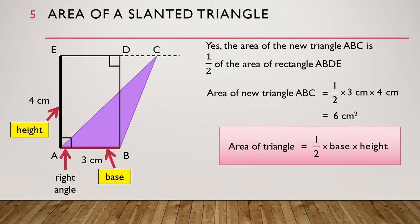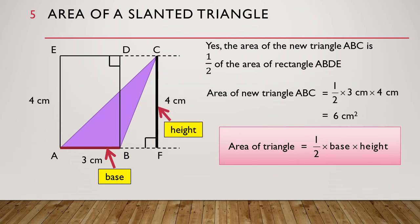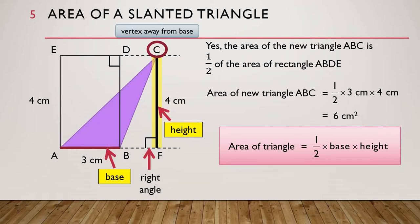Let's extend the base AB like this. We can then move the height like this. Notice that now the height starts from C, which is the vertex of the triangle that is away from the base, and goes all the way down to the line that is extended from the base AB. The height is perpendicular to this line. Note that the base is still AB only — this extended part is not part of the base of triangle ABC.